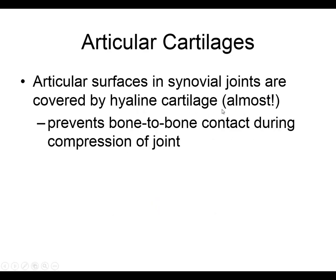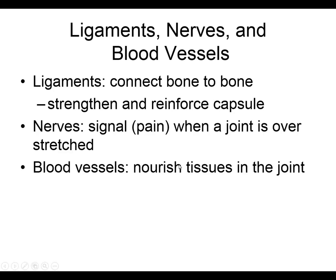The articular cartilage is almost hyaline — it has a little more fluid and fibers — and it prevents bone-to-bone contact during joint compression. This cartilage is destroyed by arthritis: in rheumatoid arthritis, antibodies attack the cartilage and destroy many synovial joints. Ligaments connect bone to bone, while tendons connect muscle to bone. Ligaments strengthen and reinforce the capsule because the synovial joint is mobile and therefore less stable.